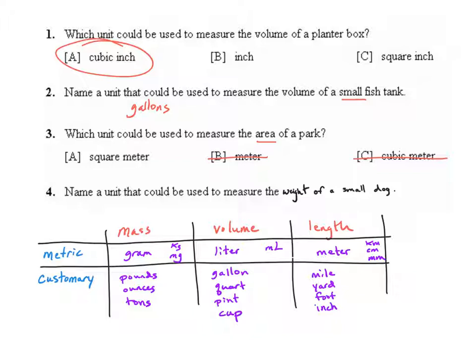Choice A is the only one that is in two dimensions which is what area is and a park is going to be a fairly large amount of square meters but it's not going to be square kilometers. Square kilometers would be for cities.